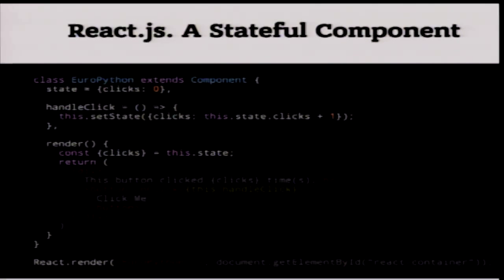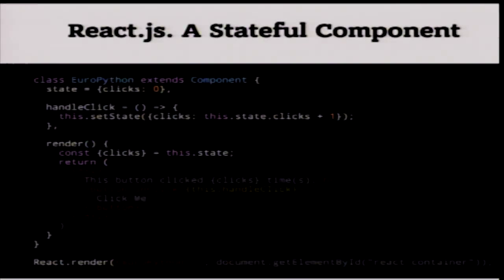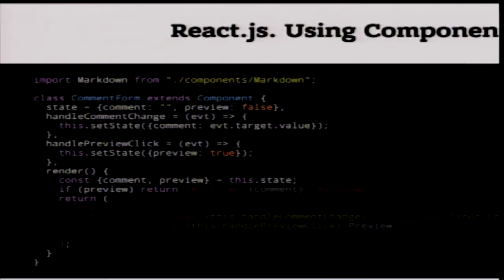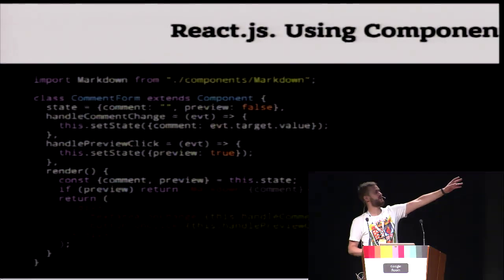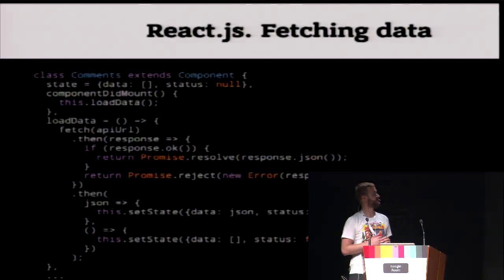This is the main idea of React: when the state changes, everything re-renders. When we click on the button, the state changes and our body will be re-rendered. Using components: React makes it possible to introduce components and use them in HTML text. You can see an 'if preview' line where we're using a new component called Markdown — not an HTML tag, but a component.